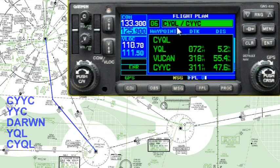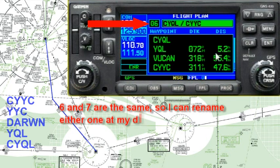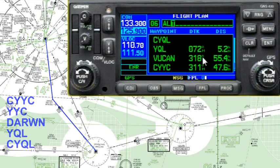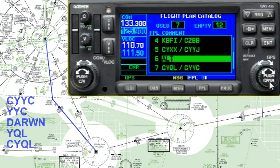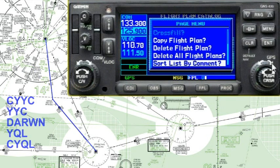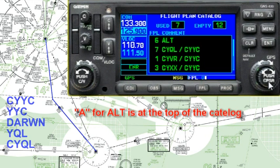Now move the cursor up to what Garmin calls the comment field — I call it the flight plan name — and enter a comment. We'll call our alternate flight plan 'ALT' for alternate. Once it says alternate, hit enter. Then hit menu again and notice you can sort the list by comments. Rather than being sorted numerically, tap that option and 'ALT' will appear at the very top of your catalog.